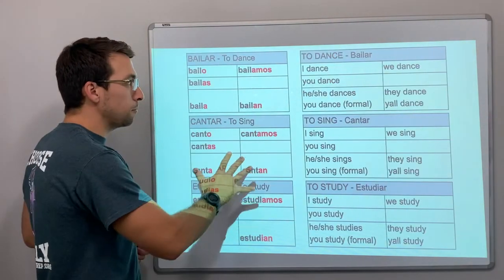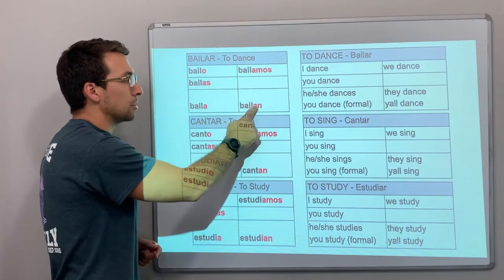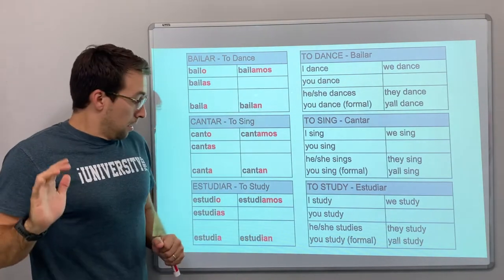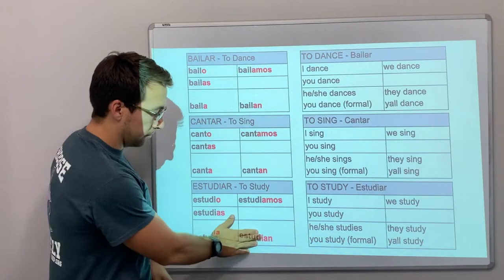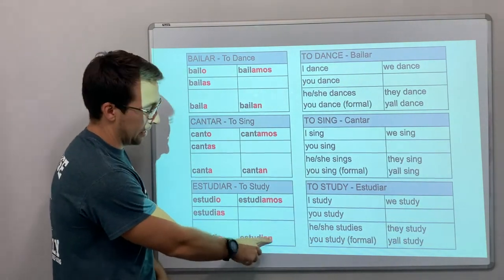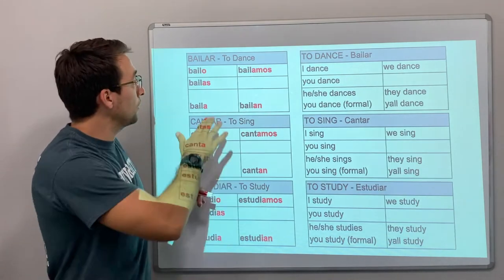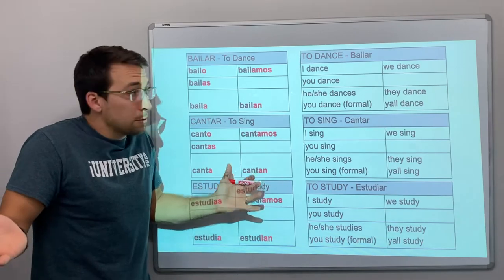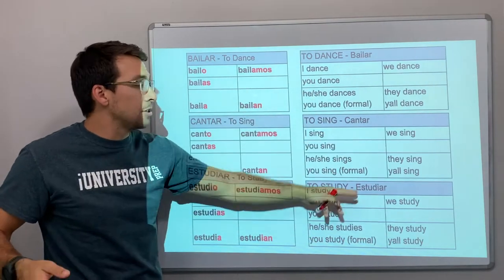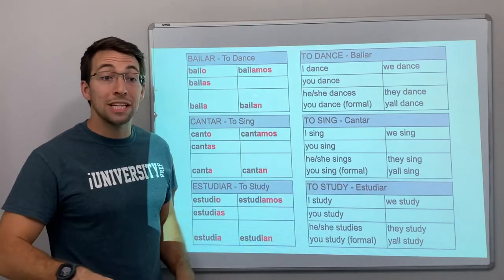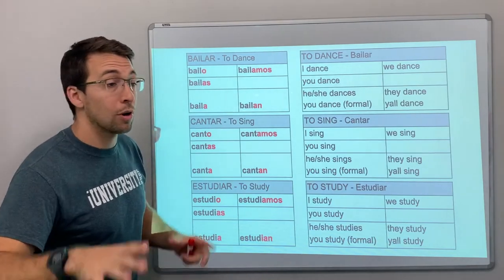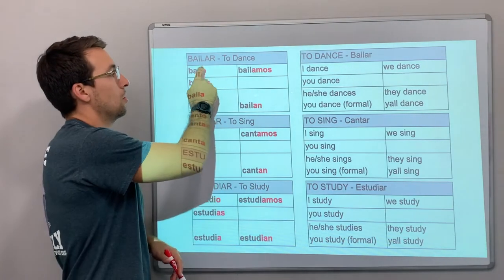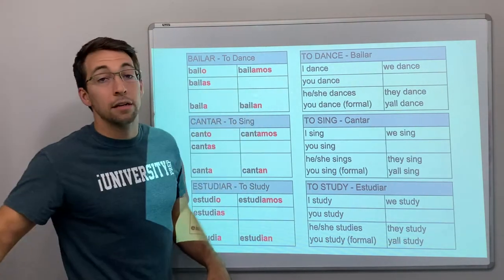Here are some AR verbs: bailar — to dance or to sing, estudiar — to study, caminar — to walk, cocinar — to cook, hablar — to talk. Regular AR verbs have these endings in the present tense: o, as, a, amos, an.